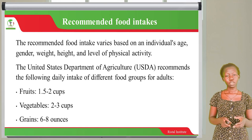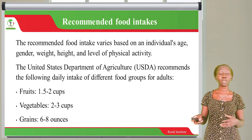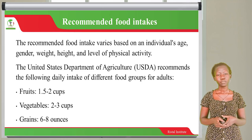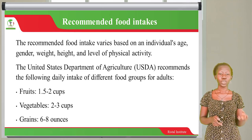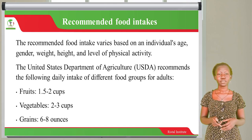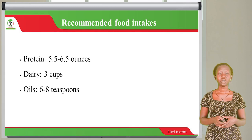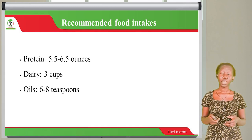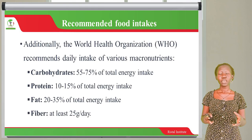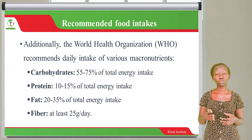For example, fruits: you are supposed to consume at least 1.5 to 2 cups of fruits a day. Vegetables: at least 2 to 3 cups. Grains: 6 to 8 ounces. Protein: 5.5 to 6.5 ounces. Dairy: 3 cups. Oils: 6 to 8 teaspoons. The World Health Organization also recommends daily intakes for various macronutrients.